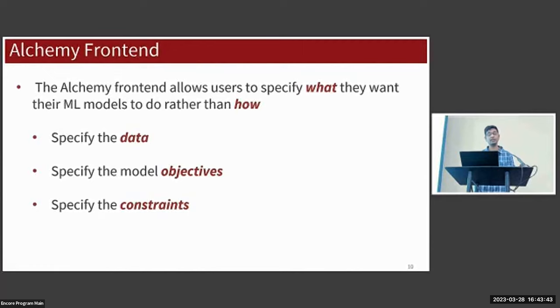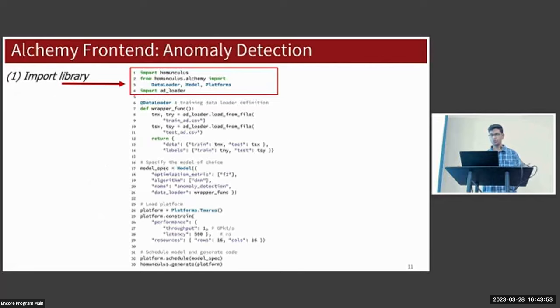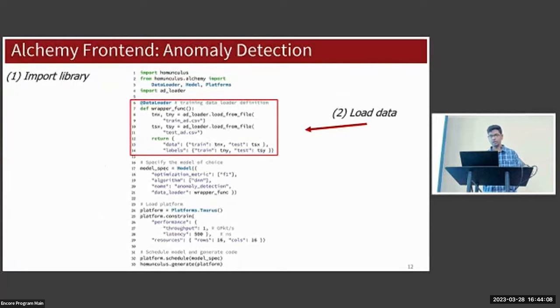Users are responsible for communicating three main elements to the compiler through Alchemy: they have to provide the data for the model to train on, they need to specify the model objectives, and then they need to specify the constraints of the system itself. Here we have an example of an anomaly detection application written in Alchemy. We want an anomaly detection ML model to run in an actual switch.